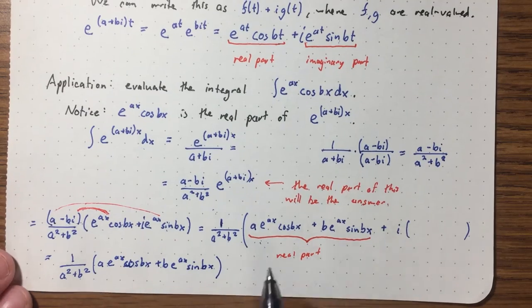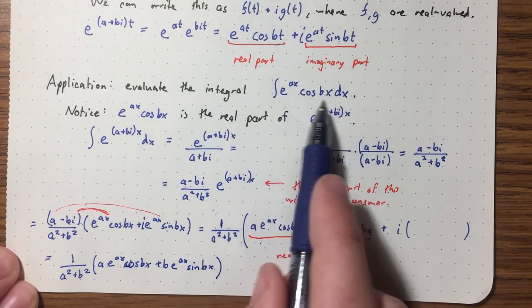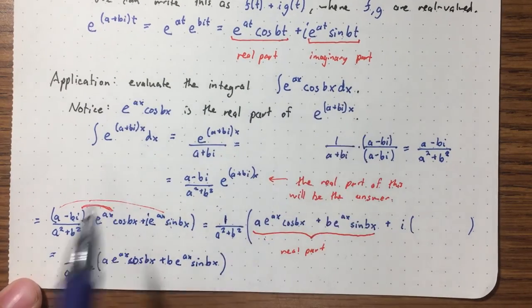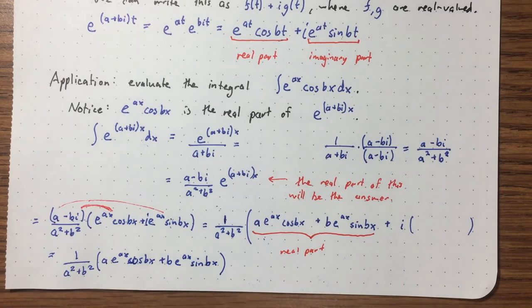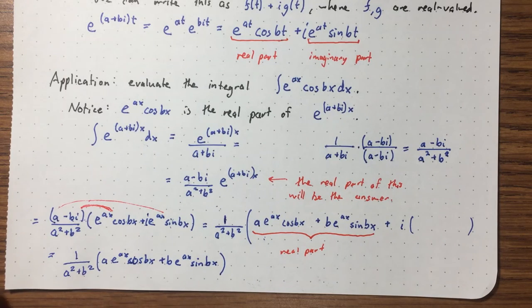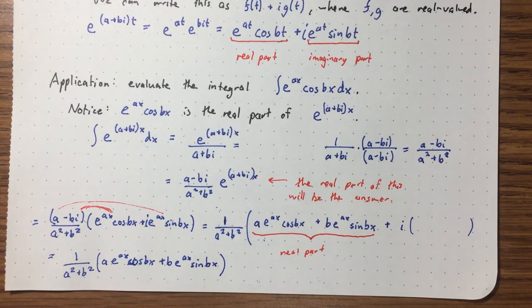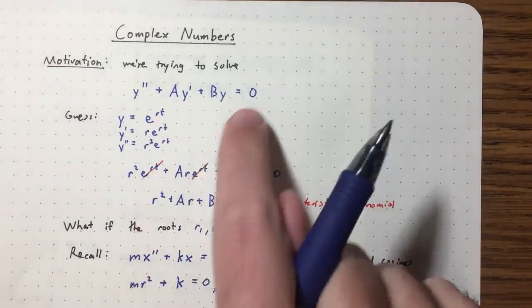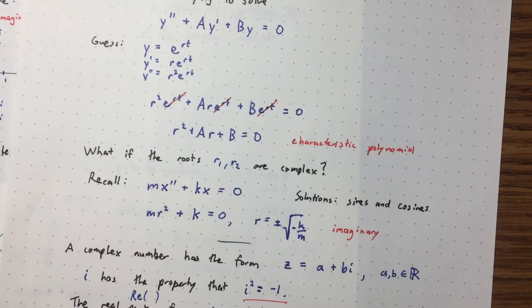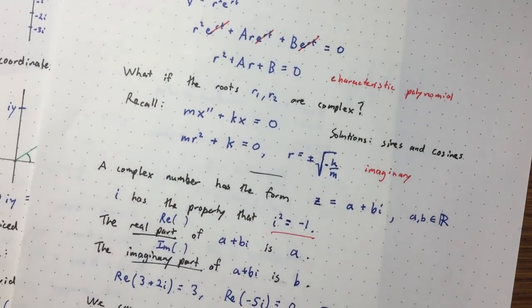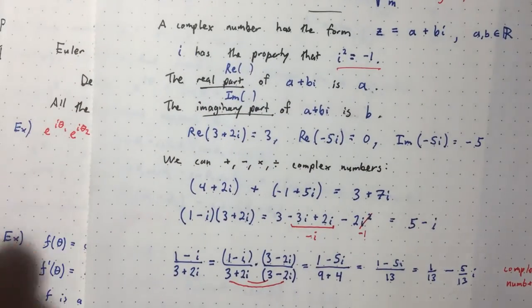This is a really cool idea — a problem that has nothing to do with complex numbers can be solved by going to the complex plane and then coming back to the real numbers with the solution. In the next lecture, we'll use all the tools we developed today to solve second order linear ODEs in the case where the characteristic polynomial has complex roots.